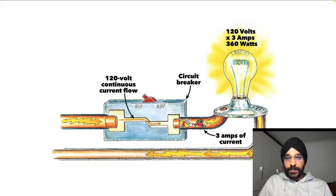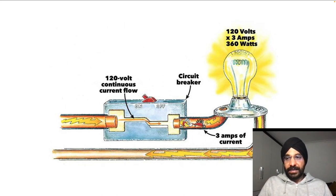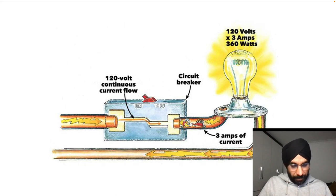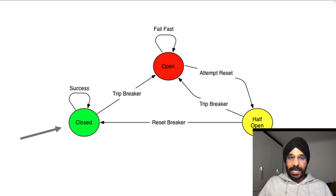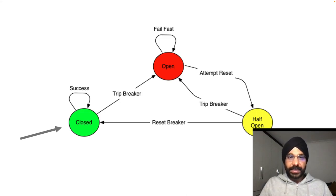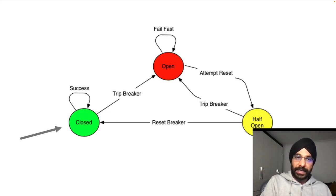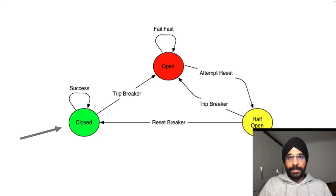The circuit breaker pattern is basically inspired by the real-world electric circuit breaker, which is used to detect excessive current draw and fail fast to protect electric equipment. You've probably seen it in your house — you have a circuit breaker. In the software world, the software-based circuit breaker works on the same notion: it basically encapsulates the operation and then monitors it for failures.